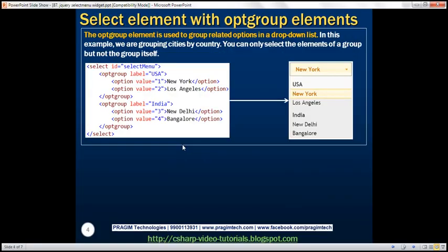Now let's look at an example of using a select element with optgroup elements. The optgroup element is used to group related options in a drop-down list. In this example, we have two groups. The first group is country USA, with options — cities — belonging to that country. In the second optgroup we have cities belonging to India. These optgroup elements are especially useful if you have a large number of options in the drop-down list.